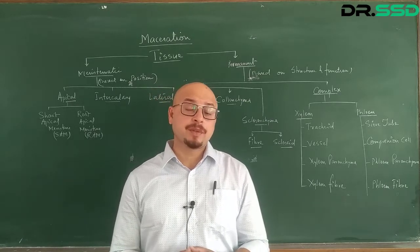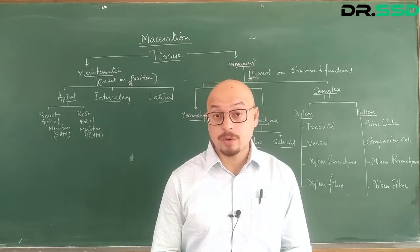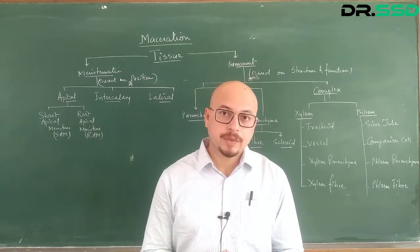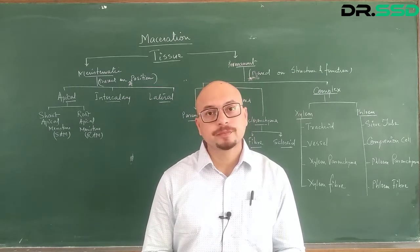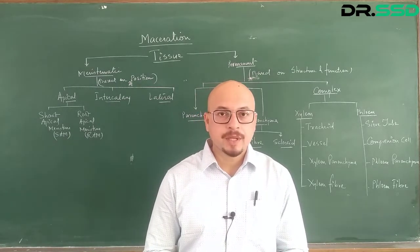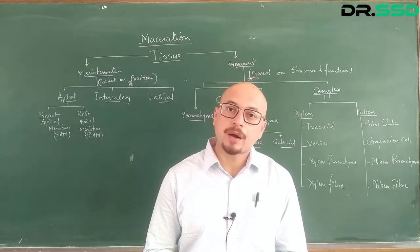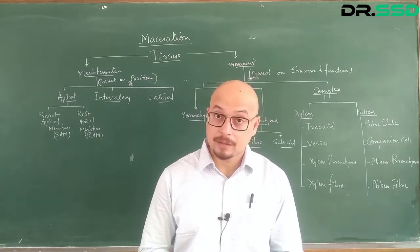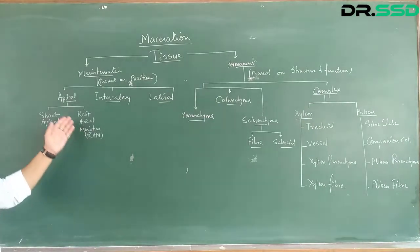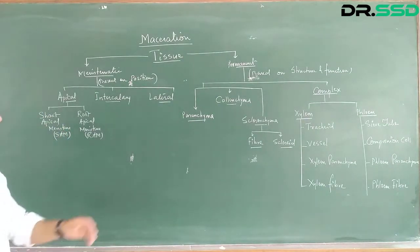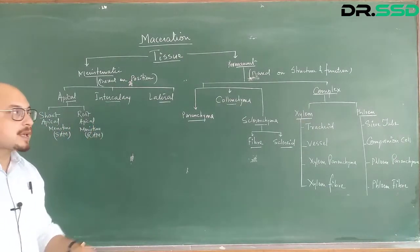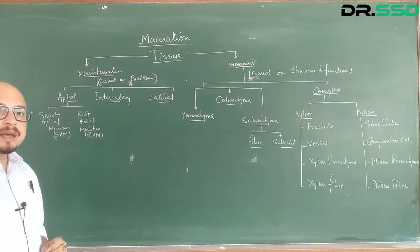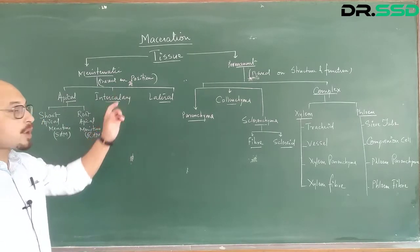They are responsible for internodal distance growth and also the girth or the diameter of the stem. Meristematic tissues are broadly of three types: apical meristem, intercalary meristem, and lateral meristem. All three meristems are classified based on their position.